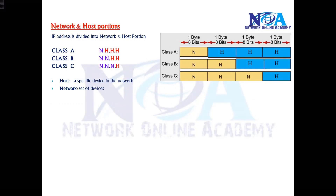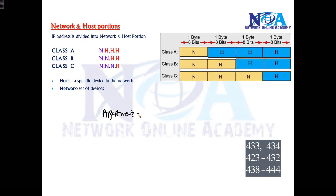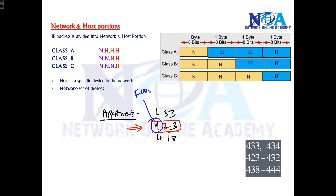Why is there a network and host portion? It's similar to flat numbering in an apartment. Generally in apartments, you'll find numbering like 433, 423, or 418. When I say I'm on flat number 423, you automatically understand that's on the fourth floor. So the first digit represents your floor, and the remaining numbers identify the room or flat number. The floor is a common part — just like the network portion — and the individual room is like the host.